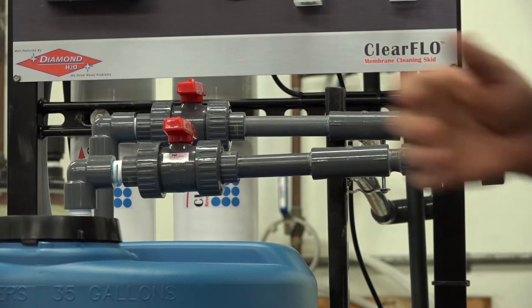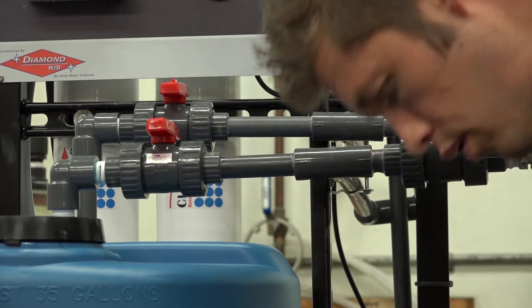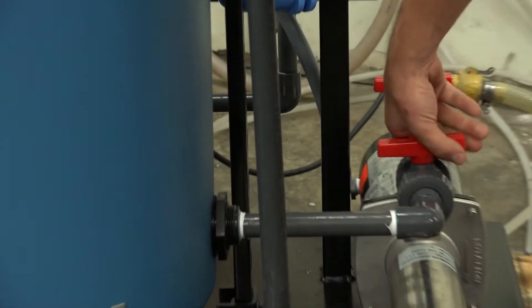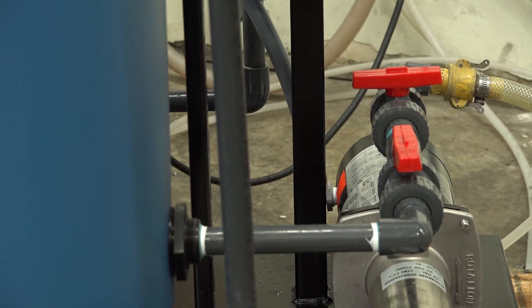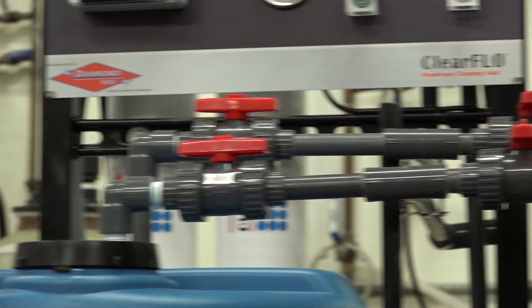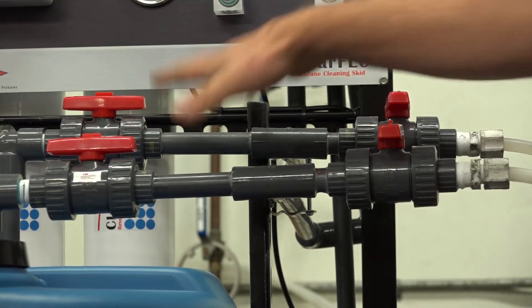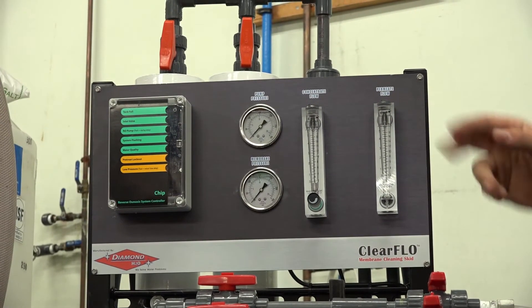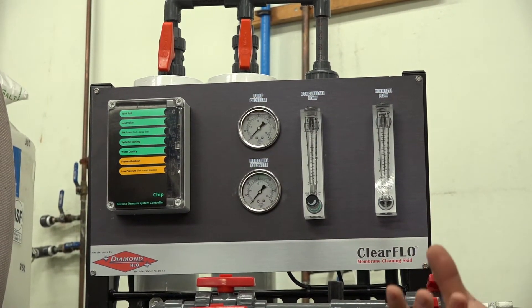You'll get it primed and you'll then open up your feed to the pump and open up your concentrate and your product line to the tank. Close your drains off once these are open and just circulate the product. You'll circulate for about fifteen minutes.